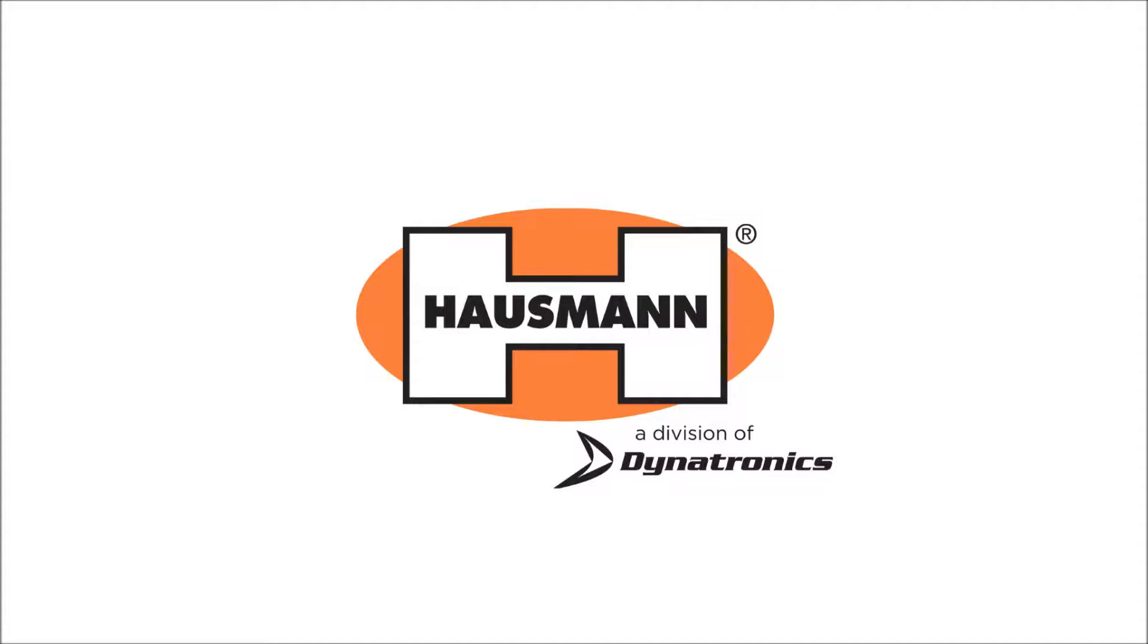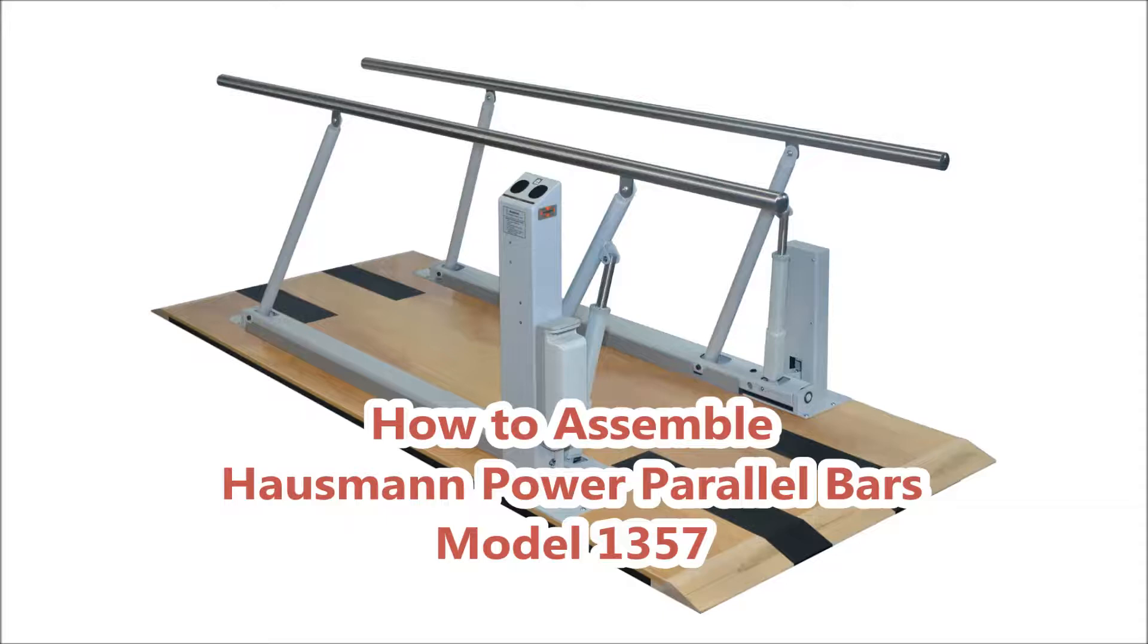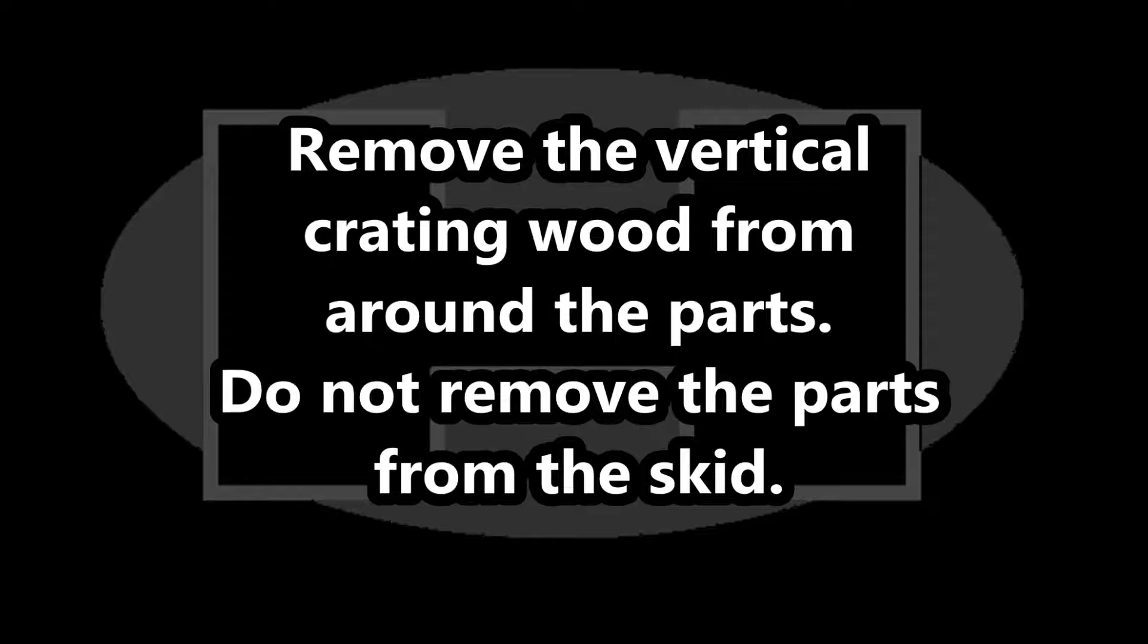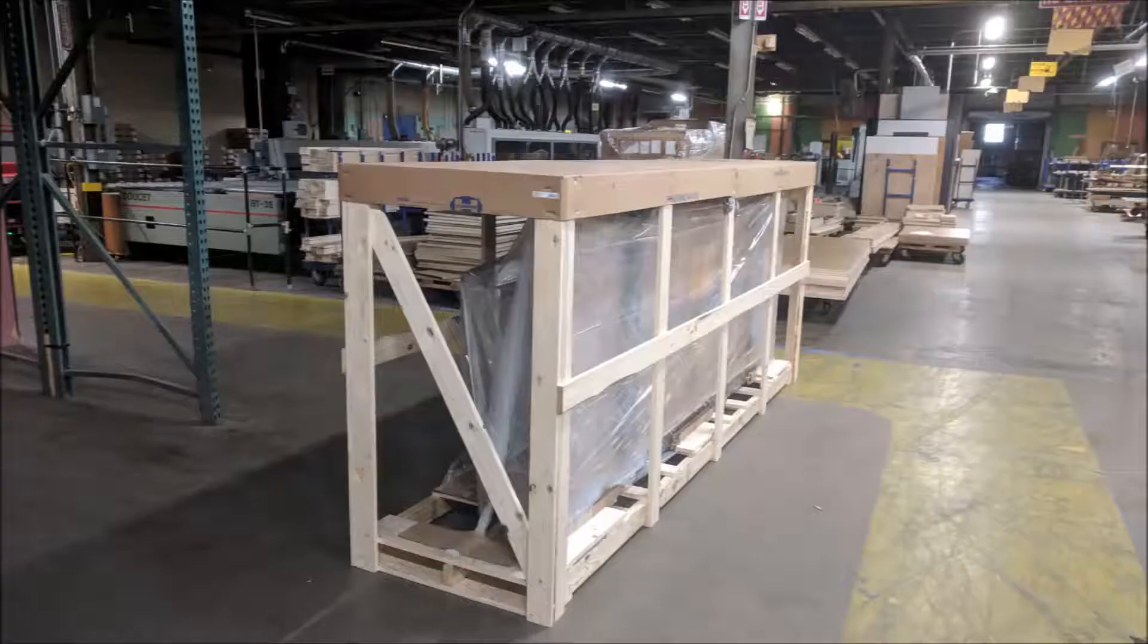How to assemble the Haussmann Power Parallel Bars, Model 1357. Remove the vertical crating wood and packaging from around the parts, but do not unbolt or remove the parts from the skid. We'll do that later.